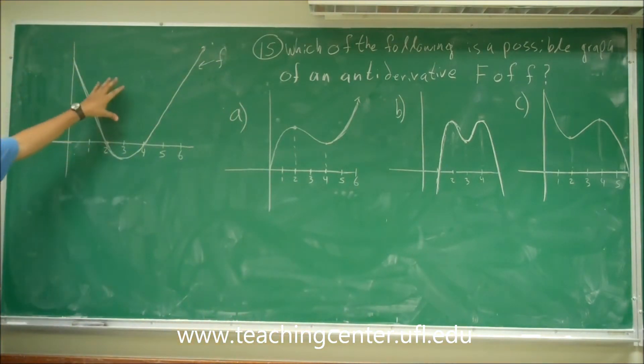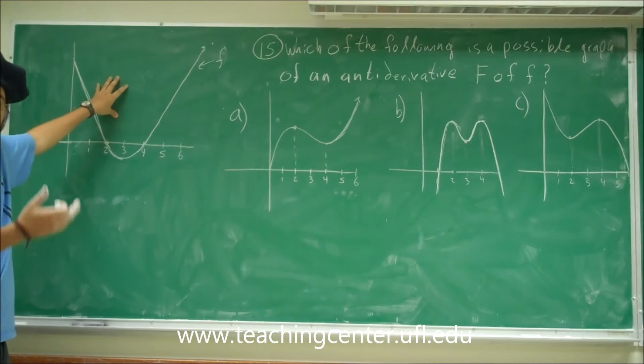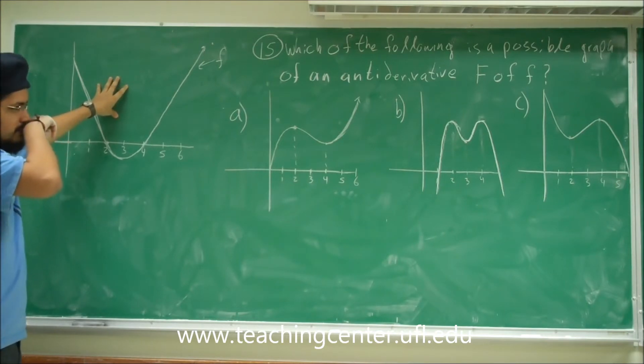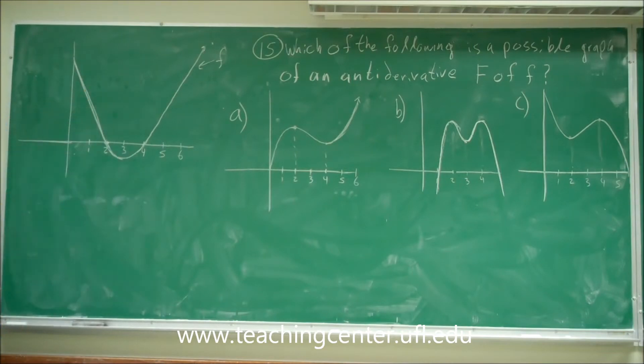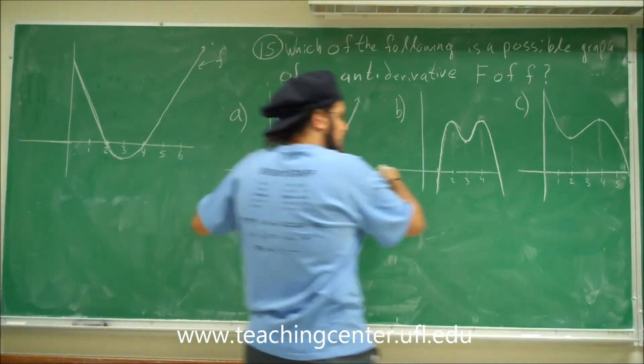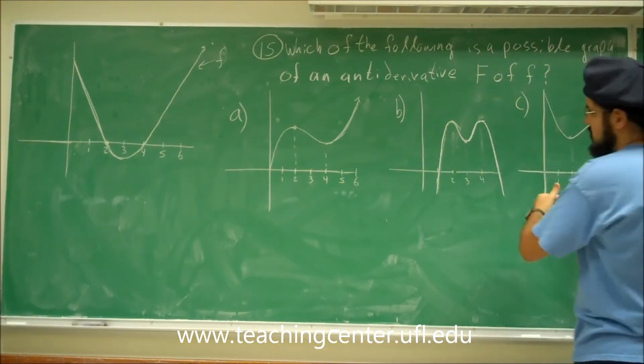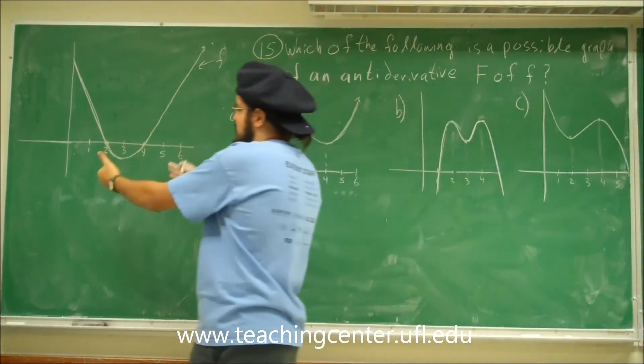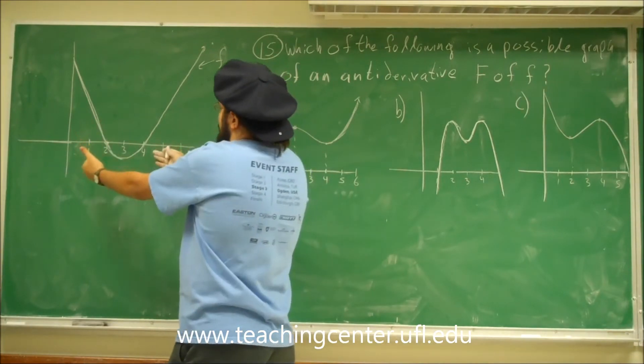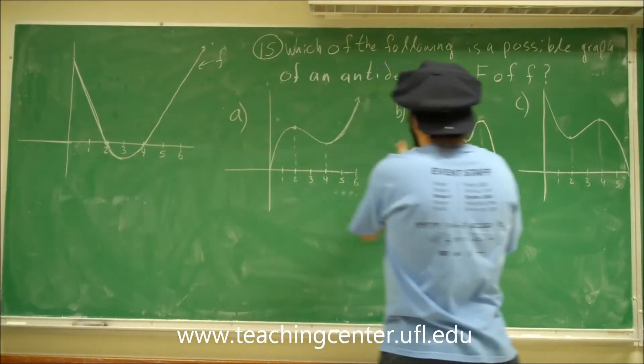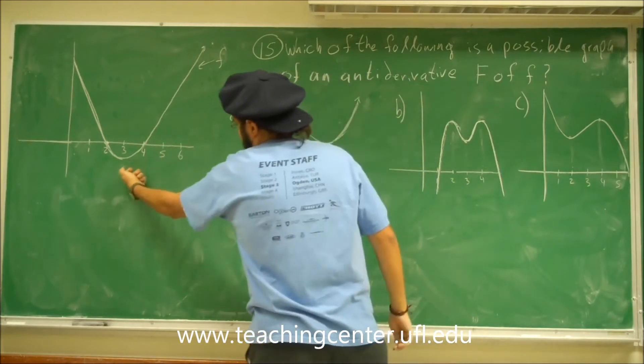So you're given f, and you want to find an antiderivative, so you want to go backwards. Now, what you want to do here is pretend one of these is your F, right? And pretend, let's take the derivative of each, and see if it coincides with this one. Because if the antiderivative of this is one of these, then the derivative of one of these is this one.